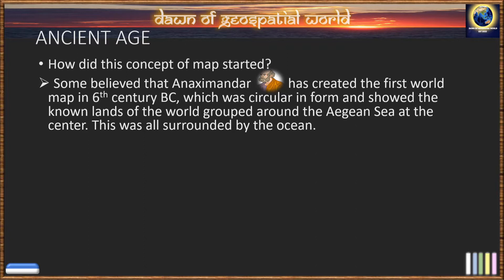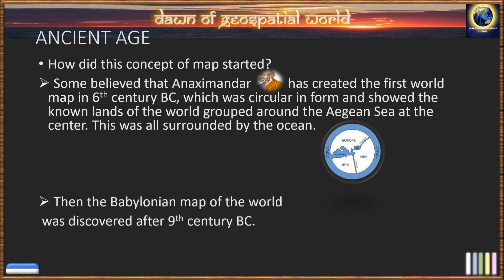This map was circular in form and showed the known lands of the world grouped around the Indian Sea at the center. This was all surrounded by the ocean. Then the Babylonian map of the world was discovered after the 9th century BCE.